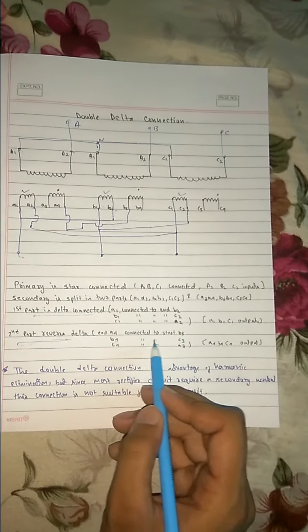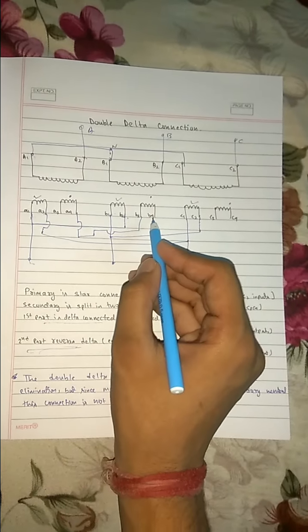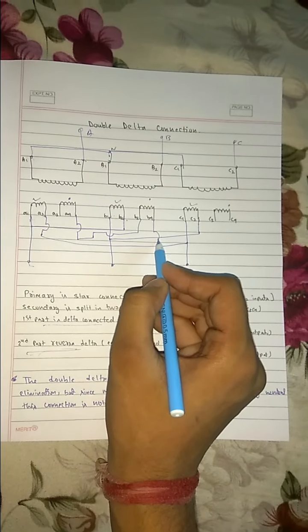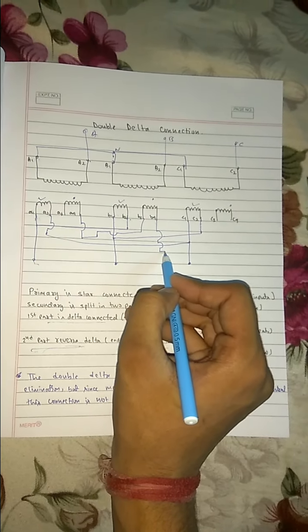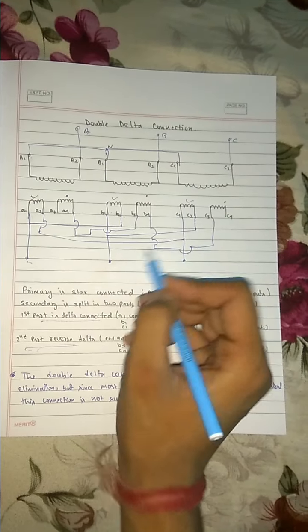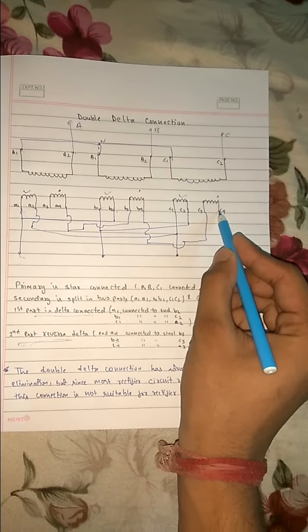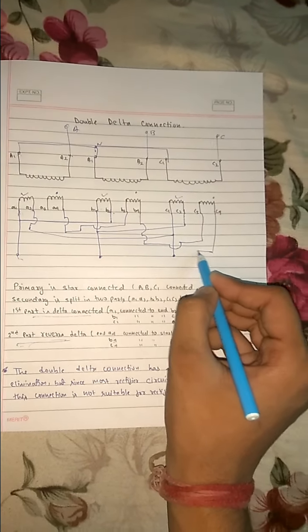B4 is connected to start A3. B4 is connected to start of C3. And the last part, C4 is connected to A4, A3.